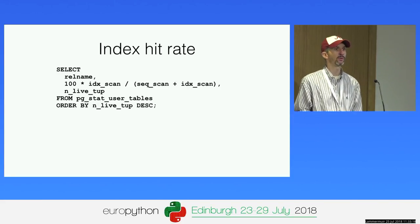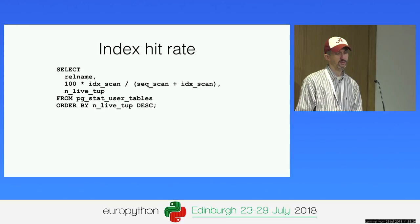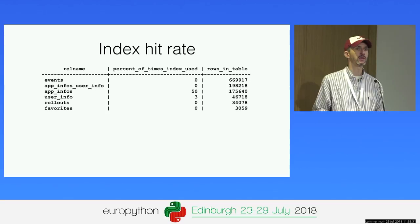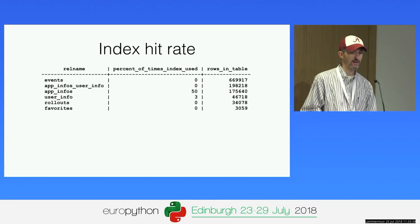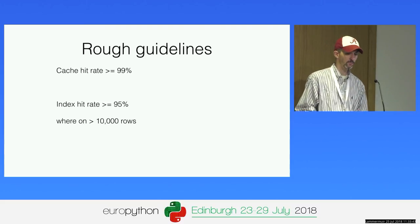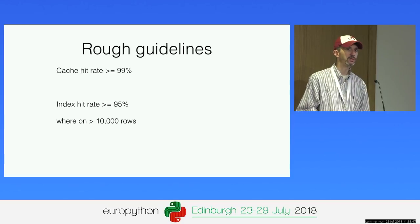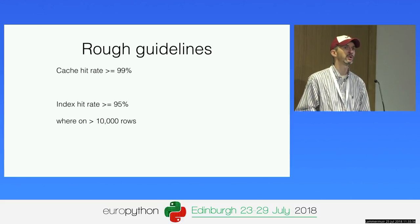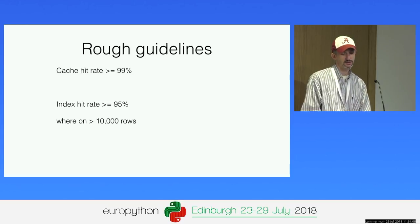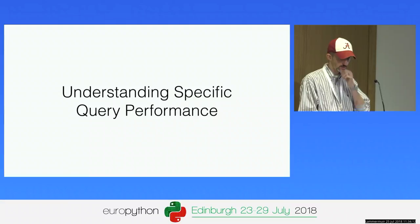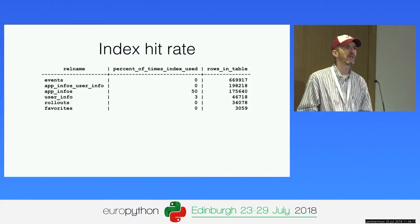The next thing to look at is: am I properly using indexes? Postgres has an index hit rate. This query shows the percentage of time an index is used against each table, and the number of rows in that table. As a rough rule of thumb: if you've got more than 10,000 rows and you're doing a lot of short lookups, you want an index hit rate of 95% or higher. This varies based on the application. For single-row inserts and lookups, you want things in cache or using an index. You can see which top tables you'd want to add indexes on.